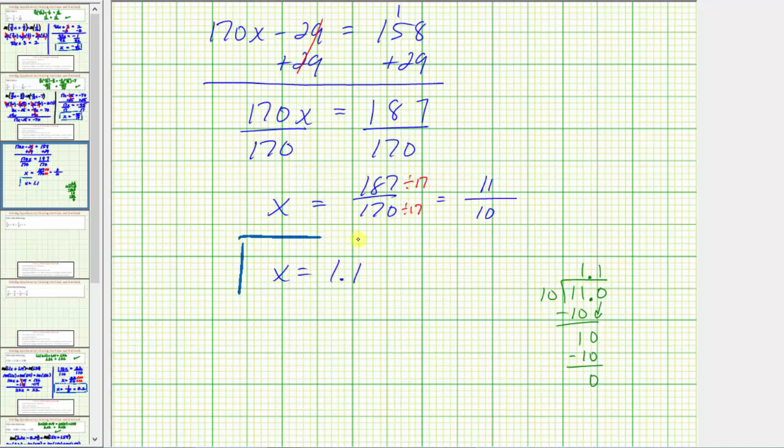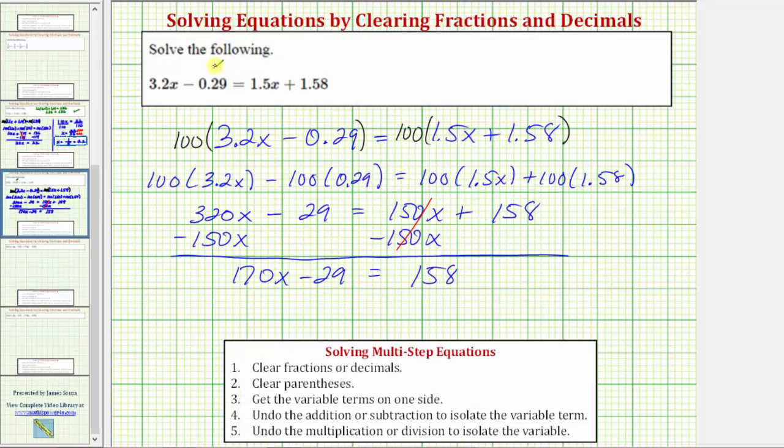Before we go though, let's verify our solution by substituting 1.1 back into the original equation. So again, to verify the solution is x equals 1.1, we'll substitute 1.1 for x in this equation here, so we'll have 3.2 times 1.1 minus 0.29 equals 1.5 times 1.1 plus 1.58.